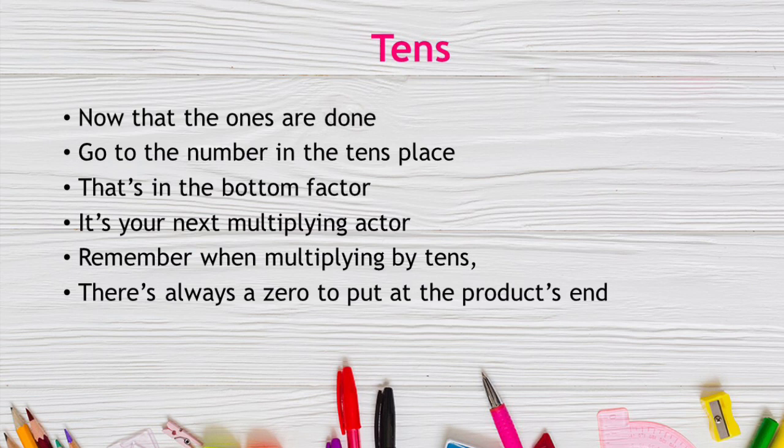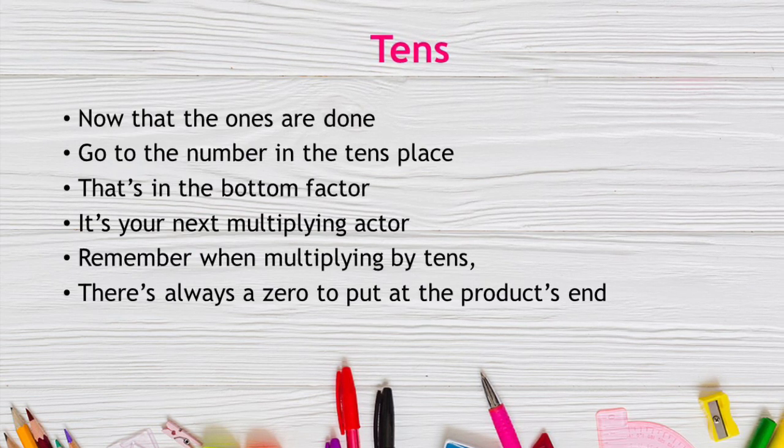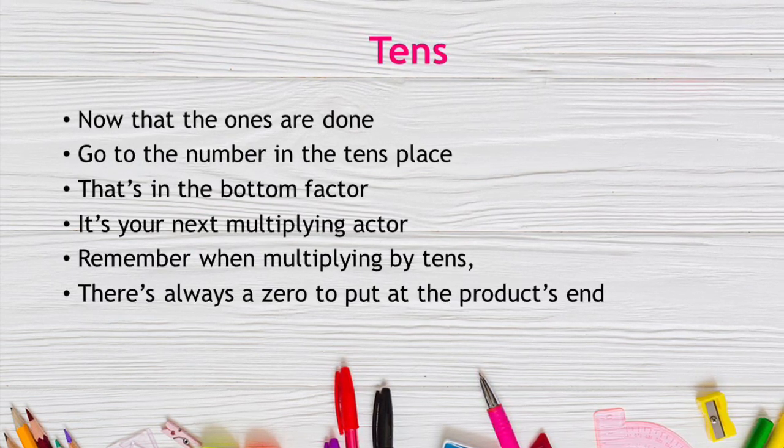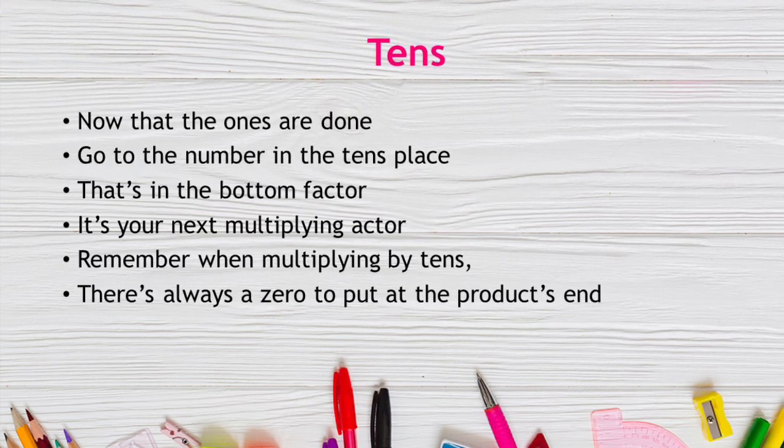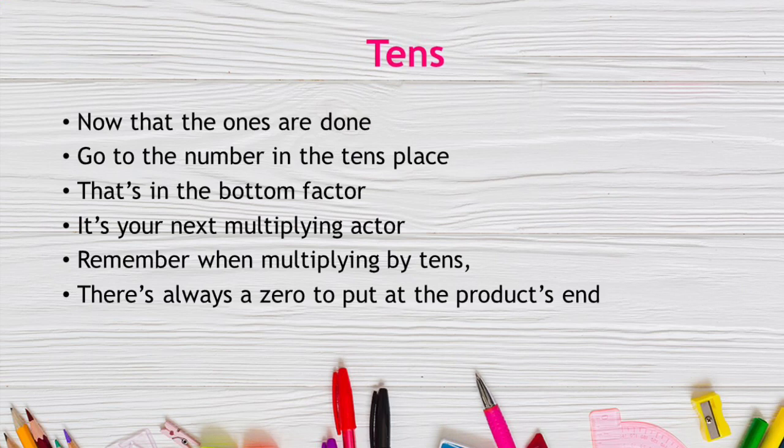Now that the ones are done, go to the number in the tens place that's in the bottom factor. It's your next multiplying actor. Remember, when multiplying by tens, there's always a zero to put at the product's end.